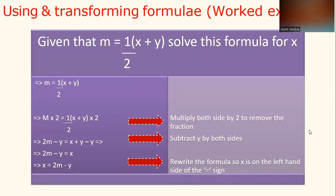This is a second worked example under using and transforming formulae. Given that M equals half of X plus Y, solve this formula for X. We have M equals 1 over 2 times X plus Y. What you have to do is multiply both sides by 2 to remove the fraction. So M multiplied by 2, and half of X plus Y multiplied by 2.